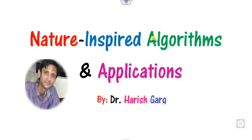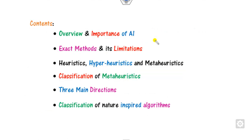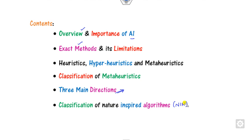Hello everyone, welcome to the next lecture on research writing. Today we will discuss what is the nature-inspired algorithm and its applications. We will cover an overview and the importance of AI, the limitations of exact methods, how they relate to heuristics, hyper-heuristics, and we will see the three main research directions. Finally, we will classify the basic nature-inspired algorithms, abbreviated as NIA.